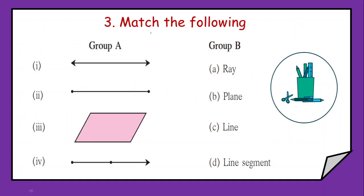Then next we have match the following. Here certain figures are given. You have to write the exact name. Now in the figure arrow head is present on both sides. So that is going to be a line. Then at both the ends dots are present. So that is going to be a line segment.